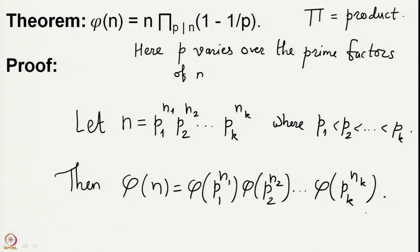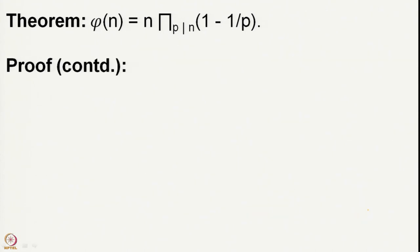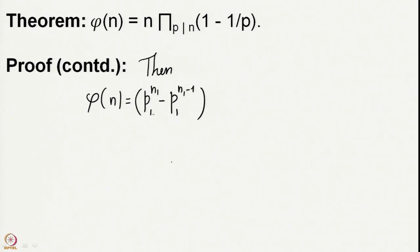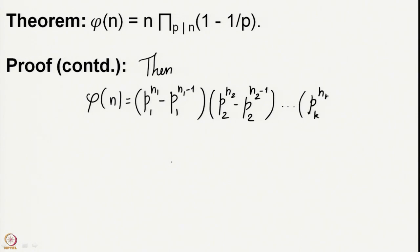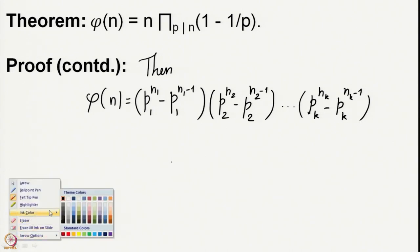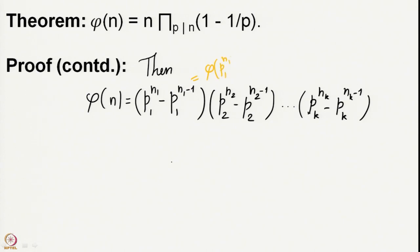Each of these phi values is known to us; we simply put the phi values for each p_i^n_i and combine them. So φ(n) = (p1^n1 − p1^(n1−1))(p2^n2 − p2^(n2−1)) · … · (pk^nk − pk^(nk−1)), since we know φ(p_i^n_i) = p_i^n_i − p_i^(n_i−1).